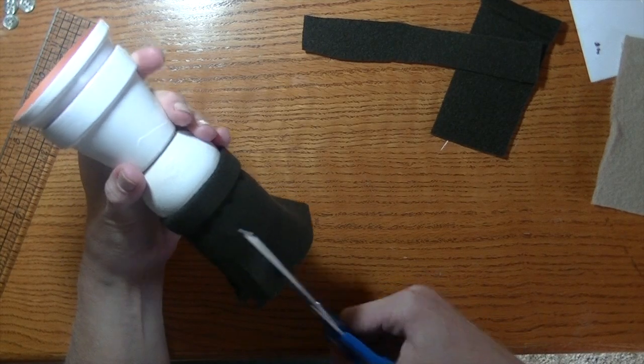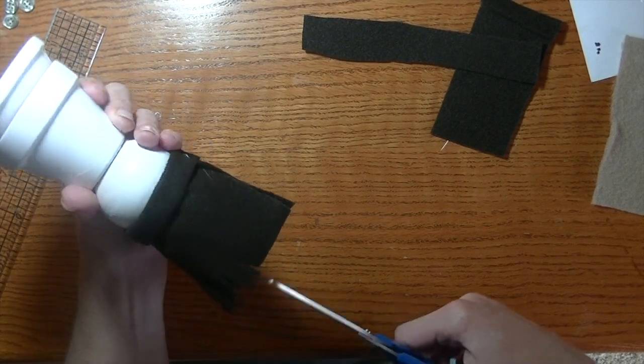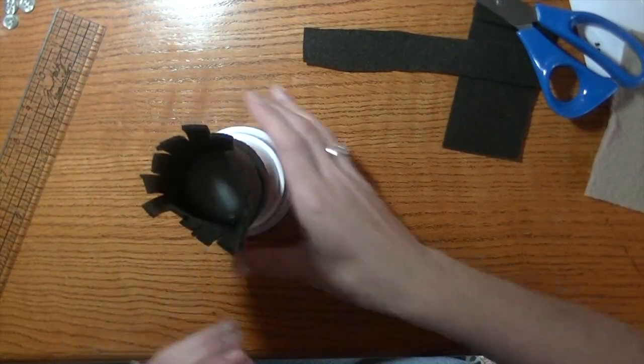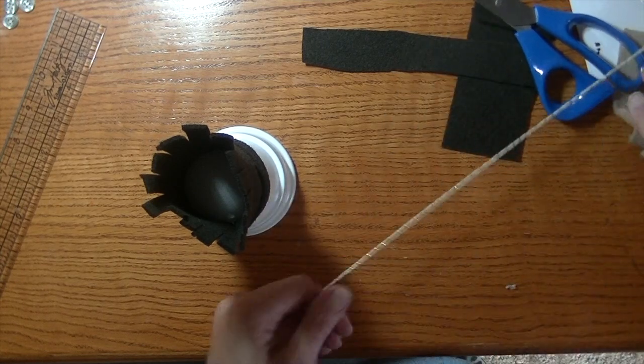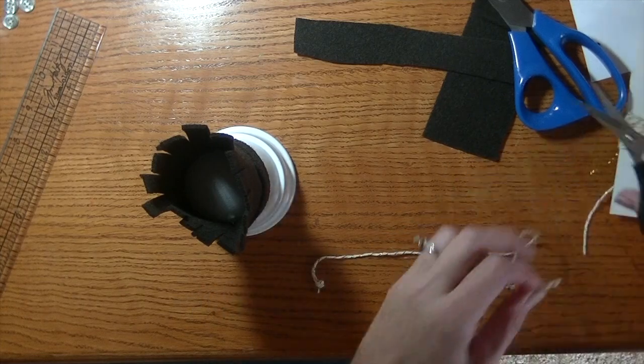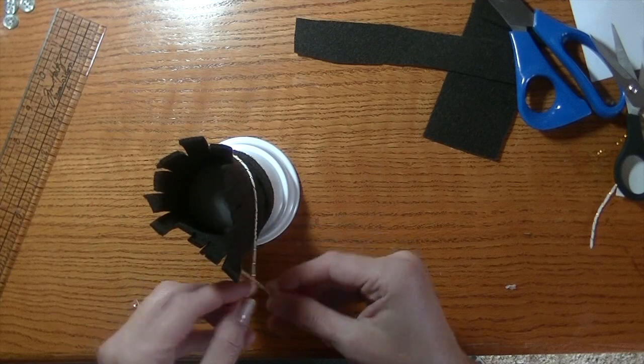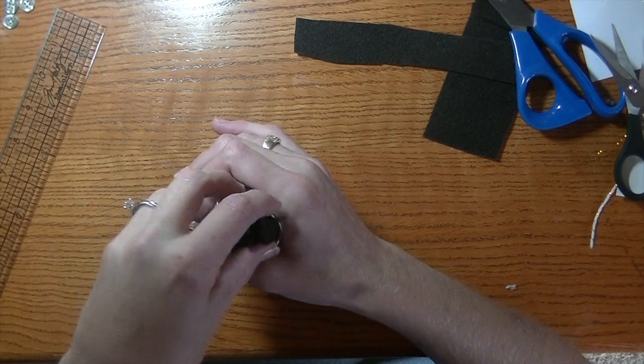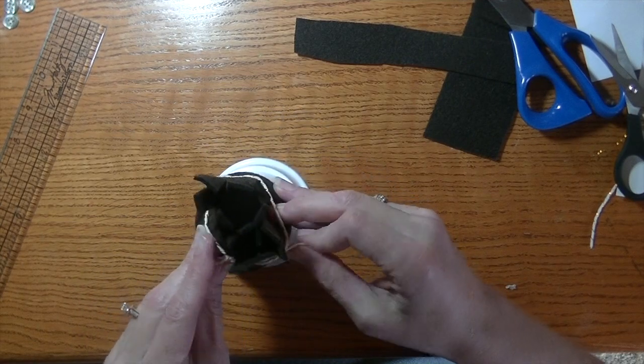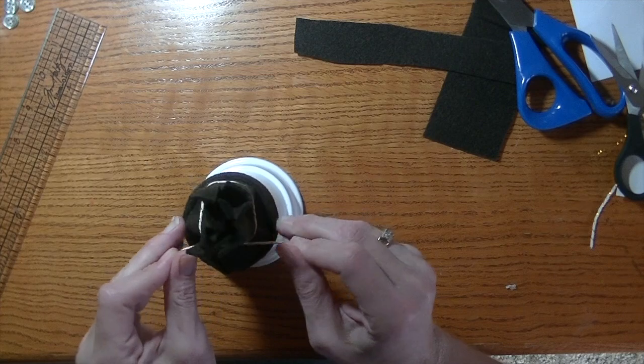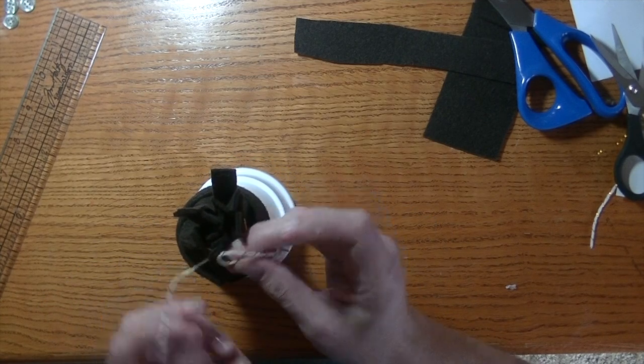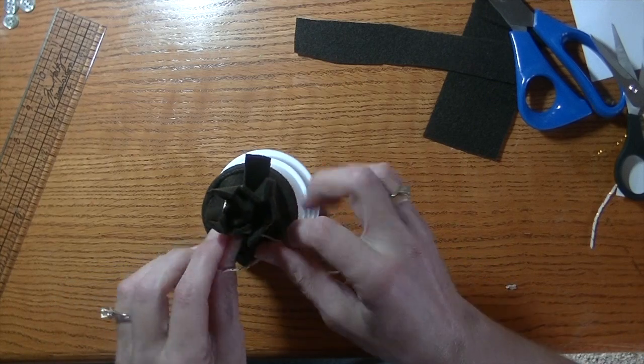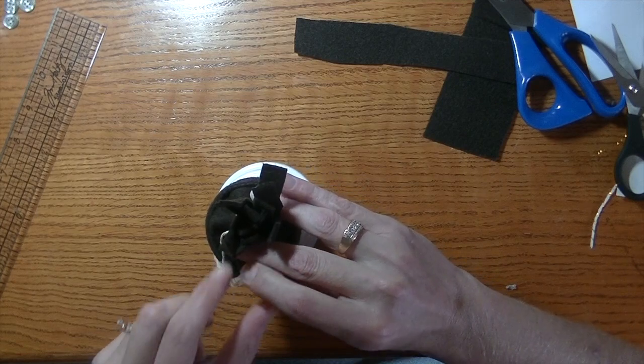If you don't have felt, you can certainly use a sock. I've seen people make snowman hats out of socks. Now we're going to take some baker's twine or a rope, whatever you have. I'm going to cut a little bit of this off and take it around. I'm going to gather it first just to get my shape, and then tie that into a knot.